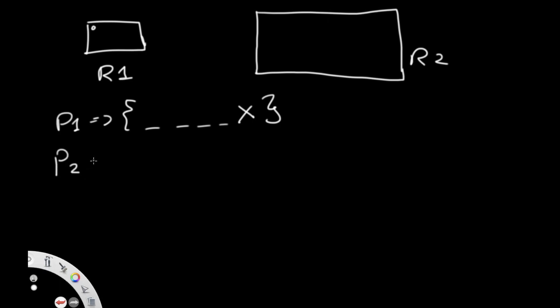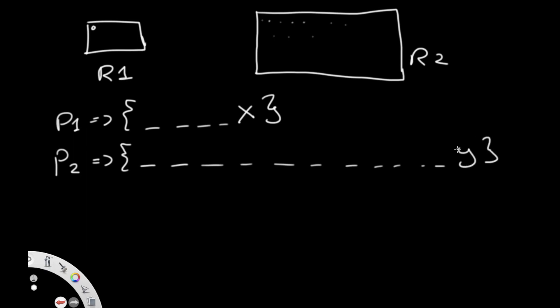Similarly, P2 will hold all the points for rectangle two. We're still going to have points, and they're going to be different from P1, but we're going to have more points because R2 has a larger area. So the length of P2 is going to be y, and y is going to be greater than x no matter what, since R2 is just bigger than R1.